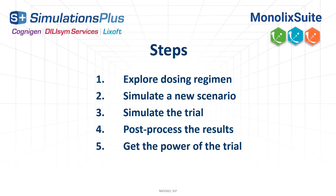To summarize this Simulix tutorial: after exporting the Monolix project to Simulix, we first explored the new dosing regimen to find two candidates that lead to the desired response for a typical individual. We then simulated a whole population in an ideal framework to compare population responses for these two dosing regimens. We then simulated a more realistic trial by adding noise, setting a realistic sample size, and defining a measurement schedule. We post-processed the outputs to obtain quantitative outcomes and defined trial success by the result of a statistical test. Finally, we obtained the power of the trial by running replicate studies. That's the end of this Simulix tutorial — I hope this will save you time for your next clinical trial simulation!